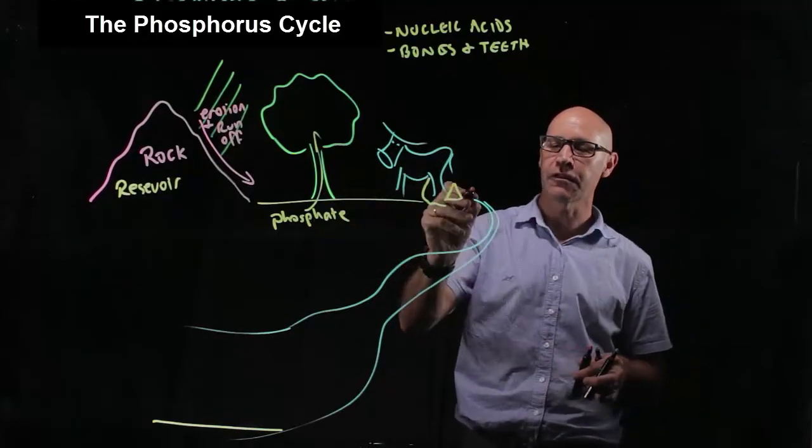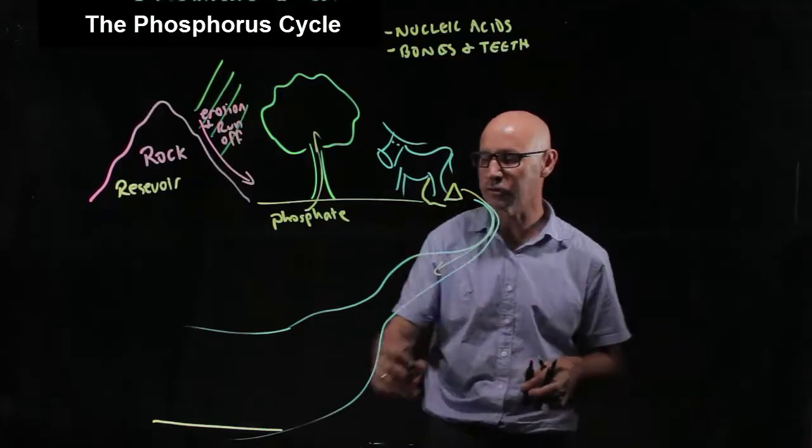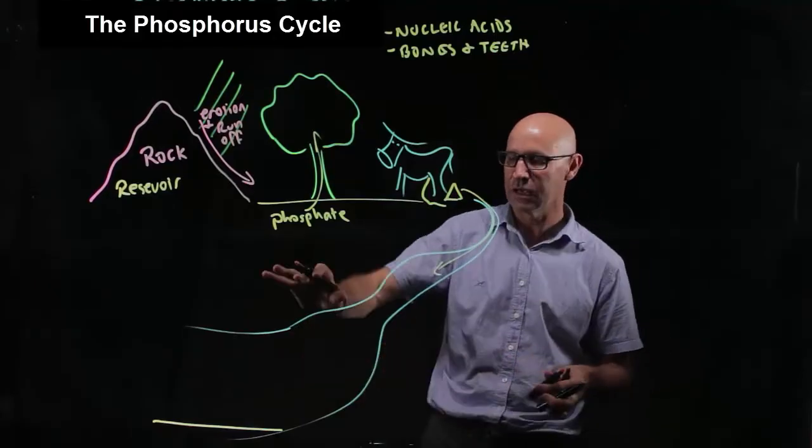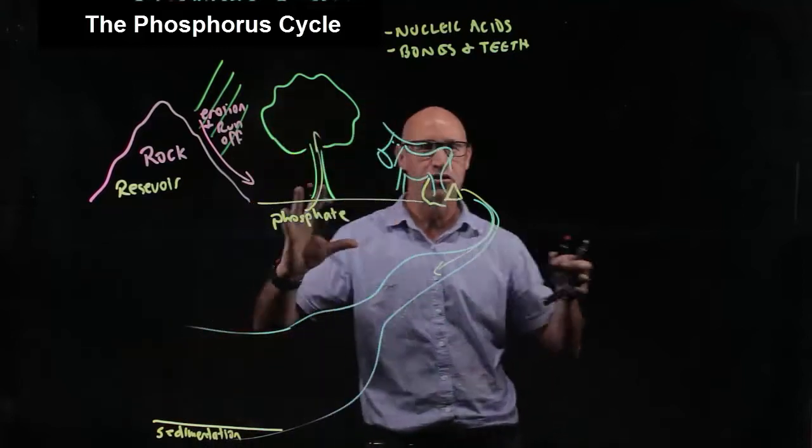But phosphorus also runs off down into waterways and ultimately into the ocean, where it forms sedimentation and forms new rock.